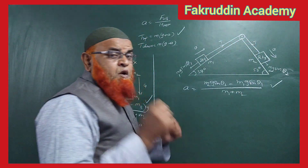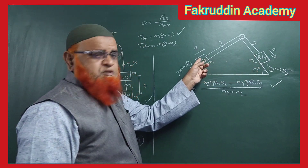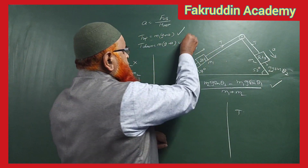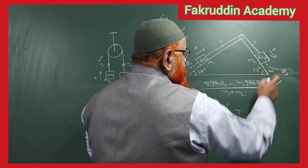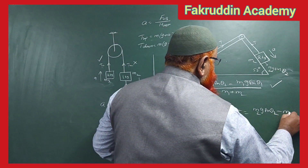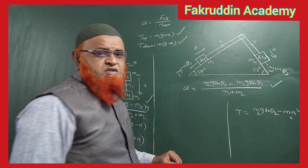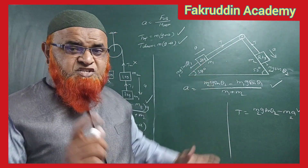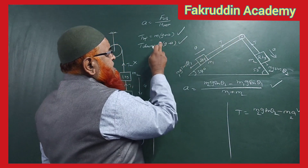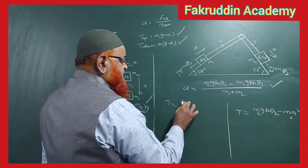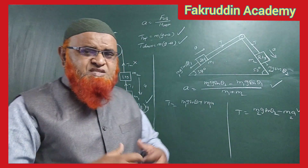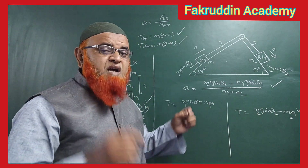With a single string, we can find tension using either block. For the downward block: T = m2·g·sinθ2 − m2·a. For the upward block: T = m1·g·sinθ1 + m1·a. Both formulas give the same answer — use whichever is easier for you.